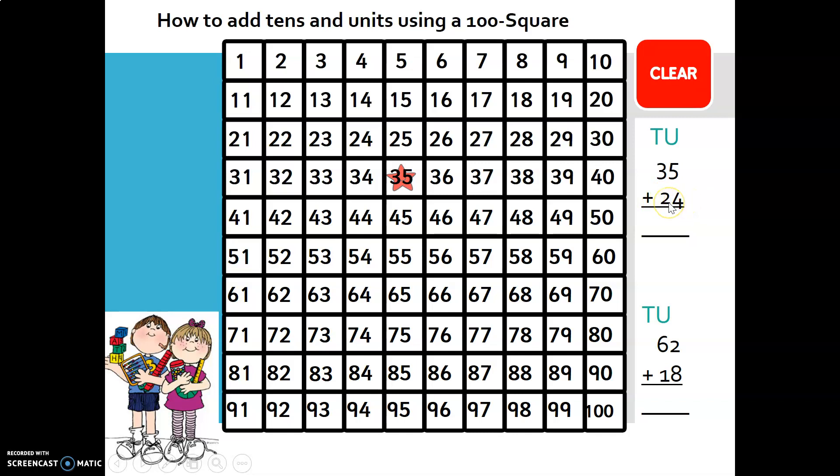We know that by moving down a row, we add 10, and there are 2 tens. So we must move down 2 rows. So 35, 45, 55. So we've added 2 tens.